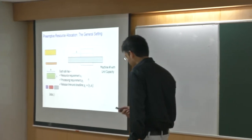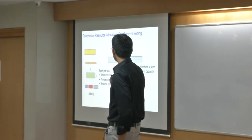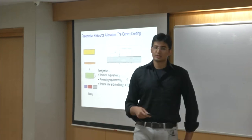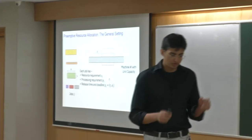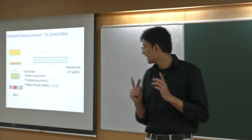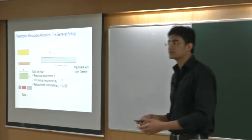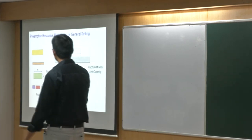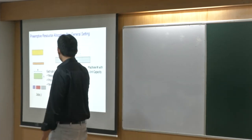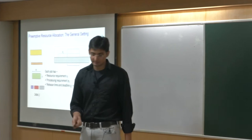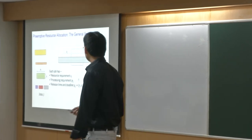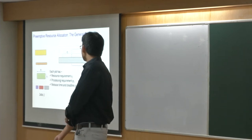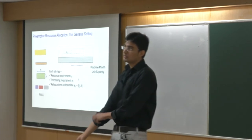What are the attributes each job has? Each job comes with a resource requirement, which is the amount of resource it requires per unit of time while it's being processed. And it has some processing requirement — the time that the job takes to be completed. So you could actually say that the total resource the job requires to be completed is the product of the processing time and the resource requirement per unit of time.